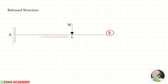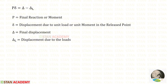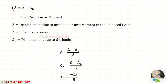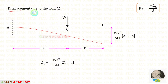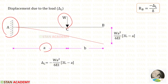From point B, I have removed RB, so point B becomes a free end. Previously we had a propped cantilever beam, but now it is a cantilever beam. We know the formula: P·δ = δL minus δ. There is no sinking or settlement at support B, so δ will be 0. Here P is RB, so RB = −δL / δ. Now let us find the displacement due to the load δL — that is the deflection at point B due to load W. In the cantilever beam, if the point load acts at a distance A from the fixed end, the formula to find the deflection at point B is WA² / 6EI · (3L − A).